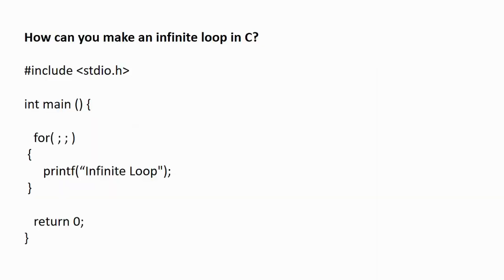Next question: how can you make an infinite loop in C? An infinite loop is one that keeps executing up to an infinite number of possibilities — it never stops its execution. To make a for loop an infinite loop, we use omission of the condition statement. If there is no condition, or if the condition never evaluates to false and is always true, the loop will continue infinitely.